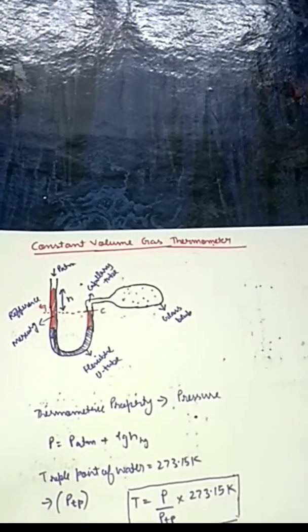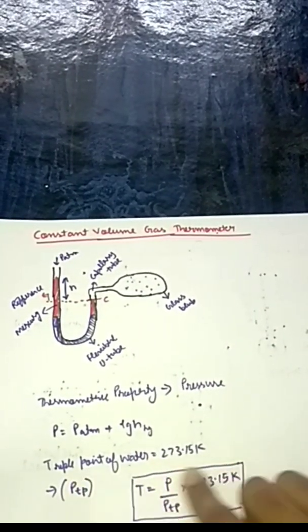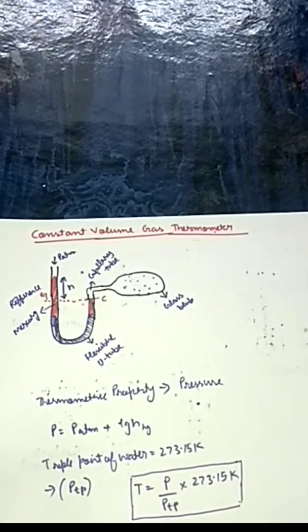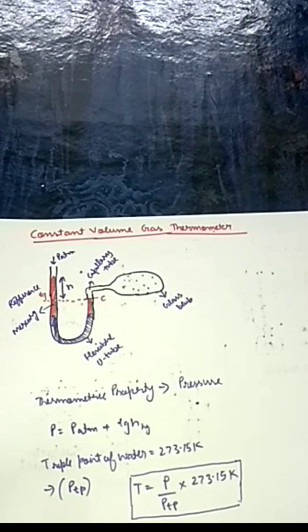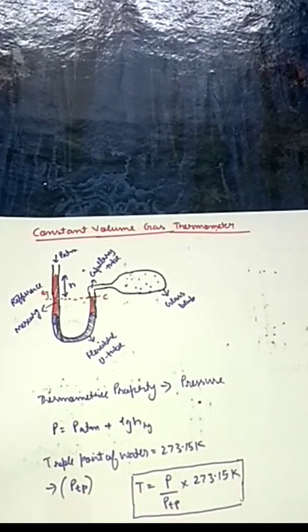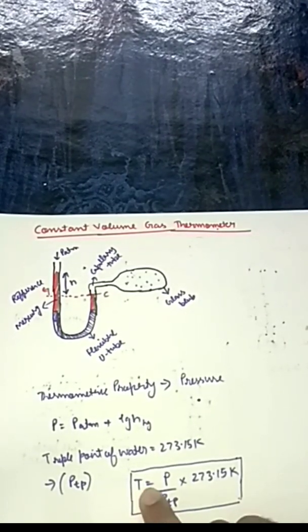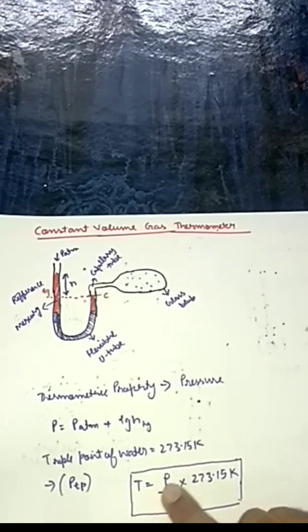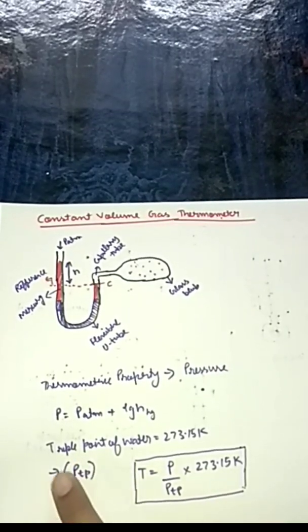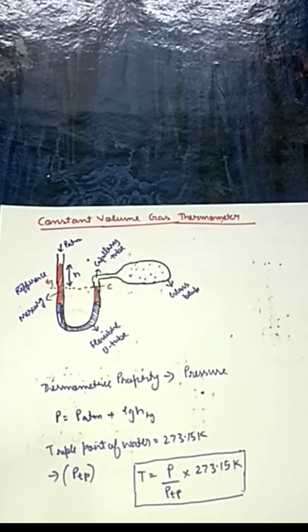To find out the temperature, you need to know the triple point of water. Suppose you dip the glass bulb into water at its triple point — 273.15 Kelvin. You find the pressure P_TP corresponding to that triple point. Then the temperature T is given by T = (P / P_TP) × 273.15 Kelvin, where P is found from the pressure formula.